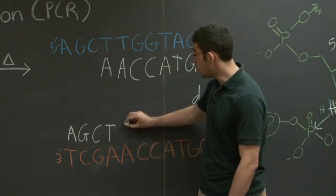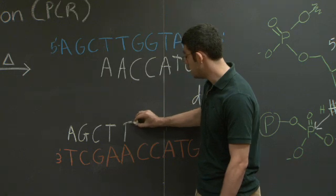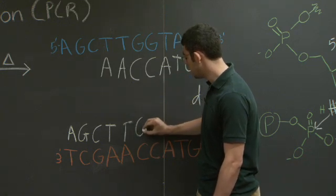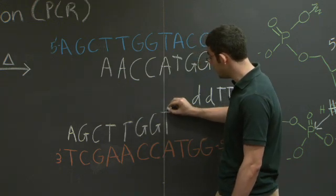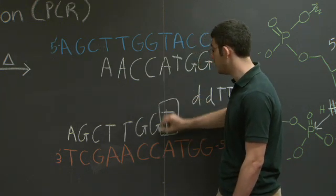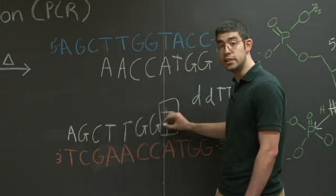So if it adds say a normal T here, continues down, continues down. If it adds a dideoxyribonucleic acid here, it's going to stop. And we're going to get a truncated sequence.